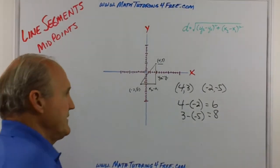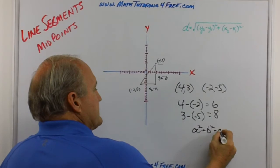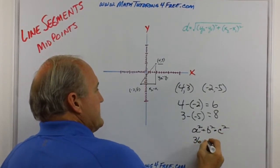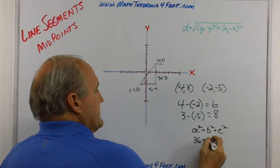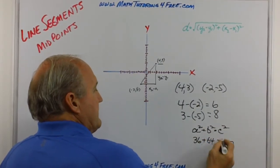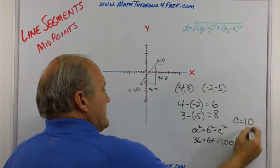Because what do we do with the Pythagorean theorem? a² + b² = c². 6² is 36, 8² is 64, the sum of them is 100. Well, if c² is equal to 100, c is obviously then equal to 10.